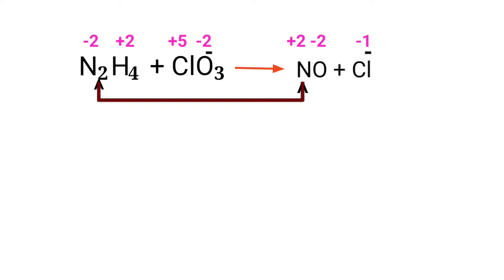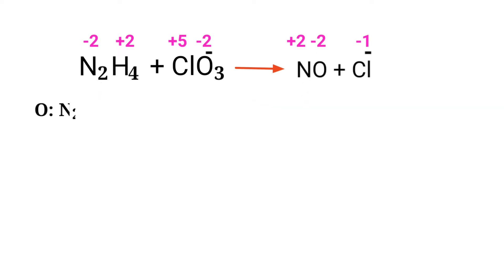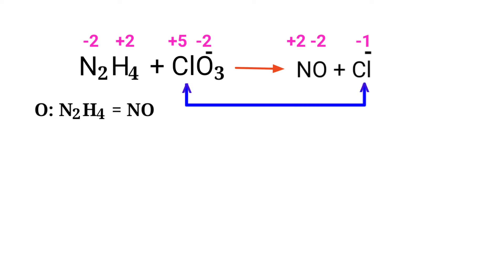First, figure out the reducing and oxidizing agents by assigning oxidation numbers. In this equation, nitrogen has a charge of minus 2 and is changing to plus 2, so nitrogen is being oxidized. Chlorine has a charge of plus 5 and is changing to minus 1, so chlorine is being reduced.